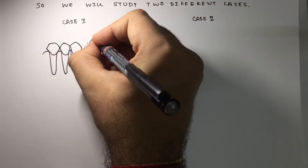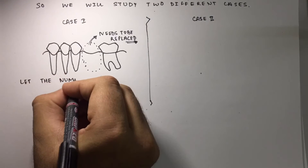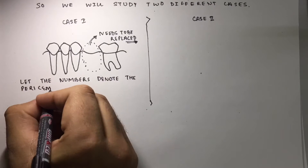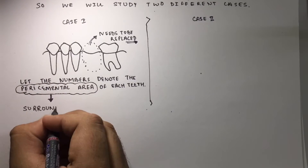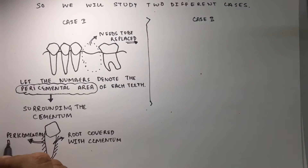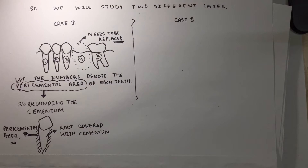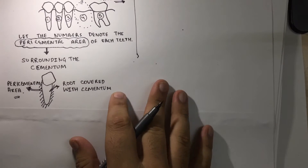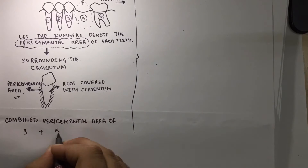In Case 1, only a single molar is missing. According to Ante's Law, we consider the pericemental area of the premolar and the second molar. The pericemental area is the area covering the cementum-covered root of the teeth. Each tooth is labeled with numbers depicting the pericemental surface area of that individual tooth. The combined pericemental surface area of teeth three and five should be equal to or greater than that of tooth four.